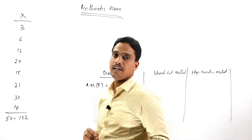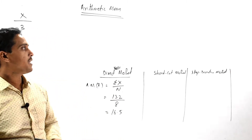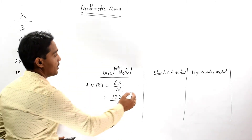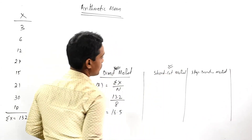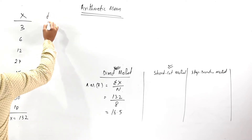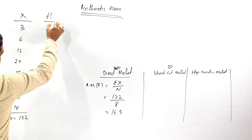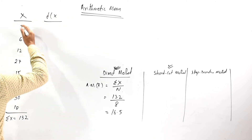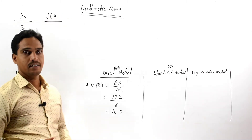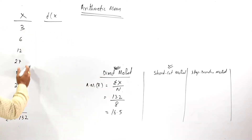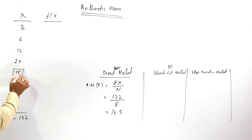Now we should find out the arithmetic mean of the given individual series under the shortcut method. For the shortcut method, we need to find D — the deviations, that is the difference between our given variables and the assumed mean. Let's take the assumed mean of the given series as 15.